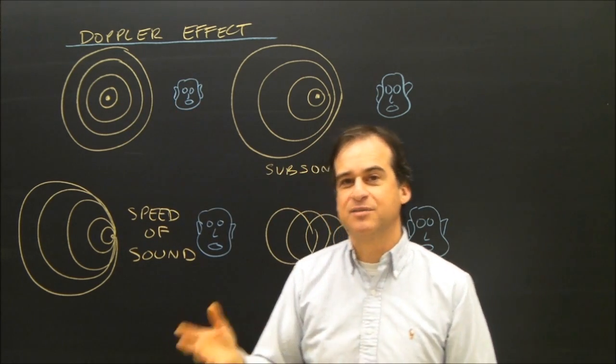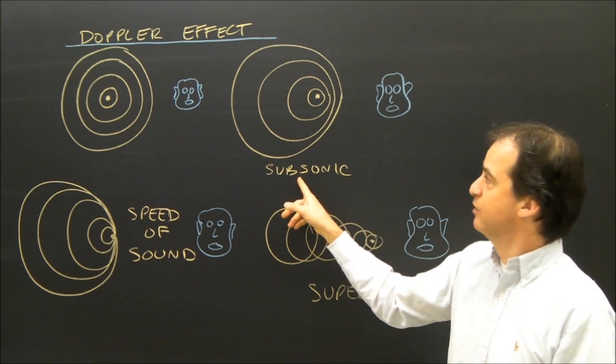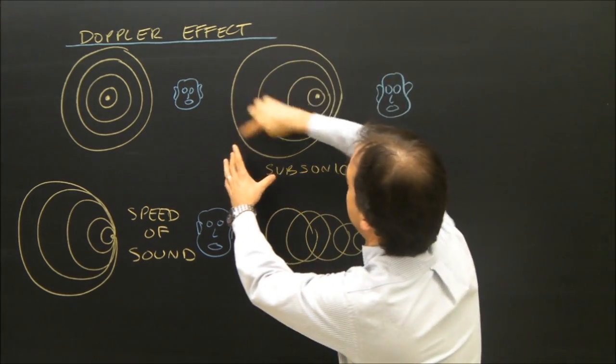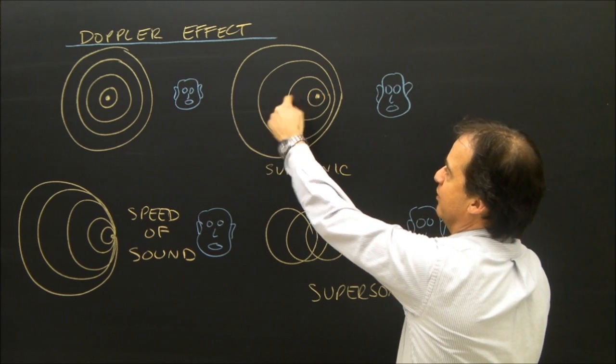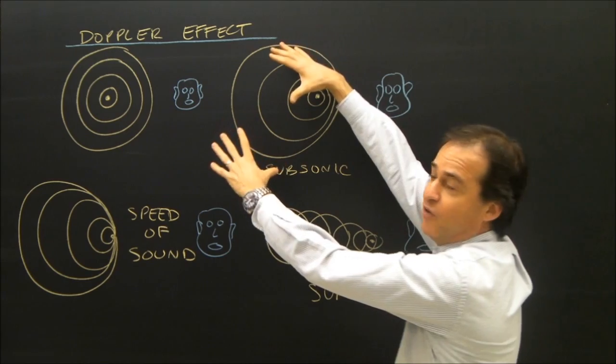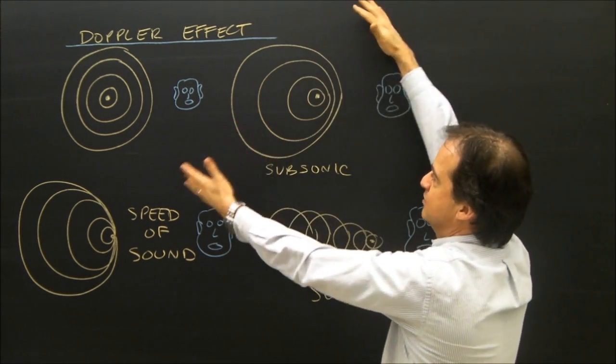If the object that's making the sound is moving, and let's say it's moving at subsonic speed, which means it's moving less than the speed of sound, then the first wave here was made when the object was over here. The object is moving this way. When it was here, it made this sound wave, and that sound wave radiated out. And when the object's over here, that sound wave had already gotten to be this big, and it's still radiating out.